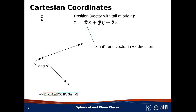In case it's not already clear, boldface characters are vectors. So when you see a caret above a boldface character, the vector is a unit vector. A unit vector is just a vector whose magnitude is 1. So, for example, boldface x with a caret above it is a unit vector that points in the same direction as the positive x-axis. I'll usually refer to that unit vector as x hat.